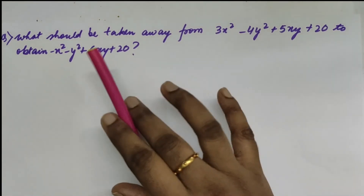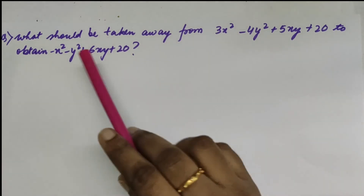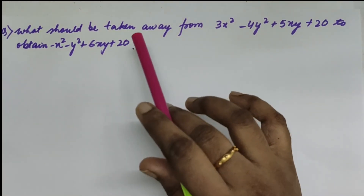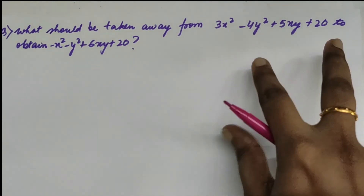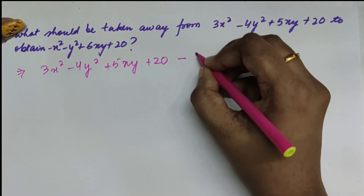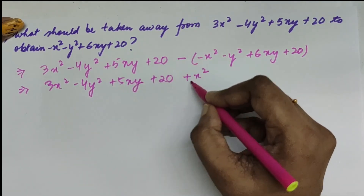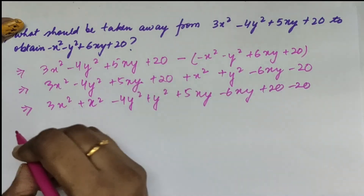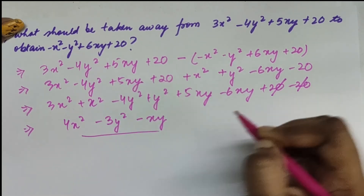The next question asks: what should be taken away from 3x² minus 4y² plus 5x plus 20 to obtain minus x² minus y² plus 6xy plus 20? Since we are taking away, we write 3x² minus 4y² plus 5x plus 20 first, then put a minus sign with the unknown expression in brackets. Opening the bracket carefully — changing all signs — and grouping like terms: we get 4x² minus 3y² minus 6xy, and the 20 terms cancel. This is our final answer.